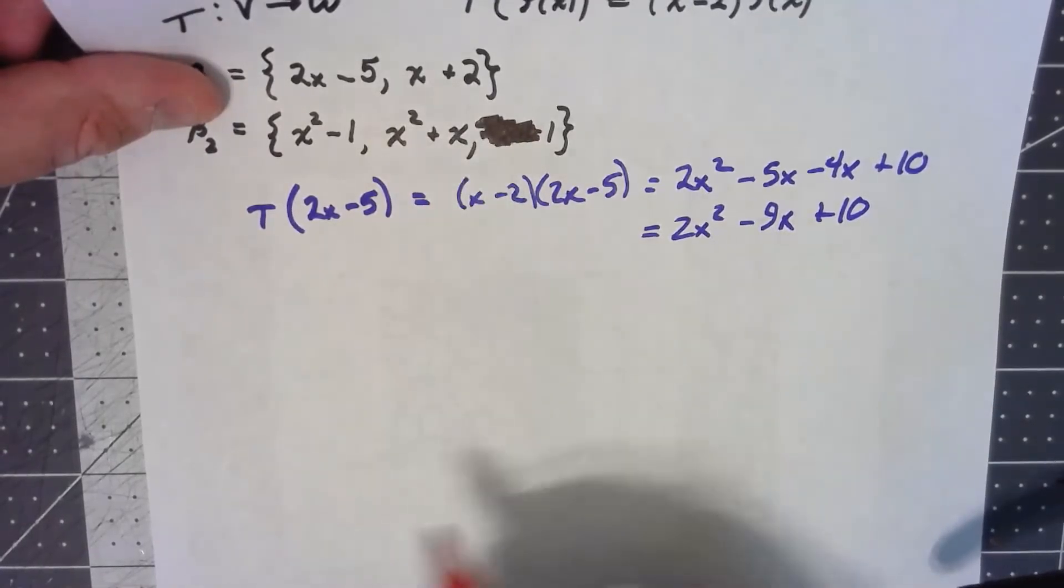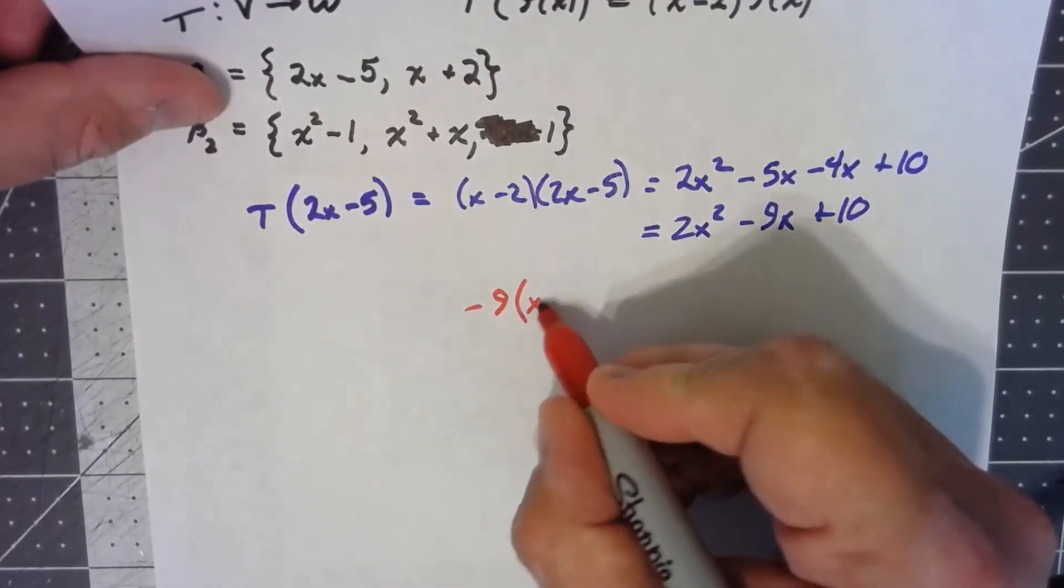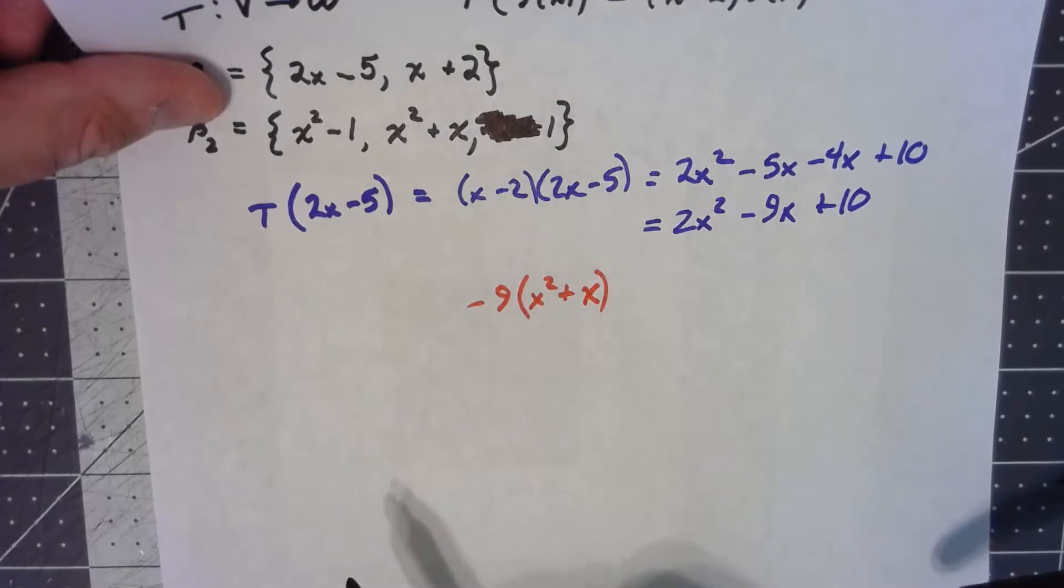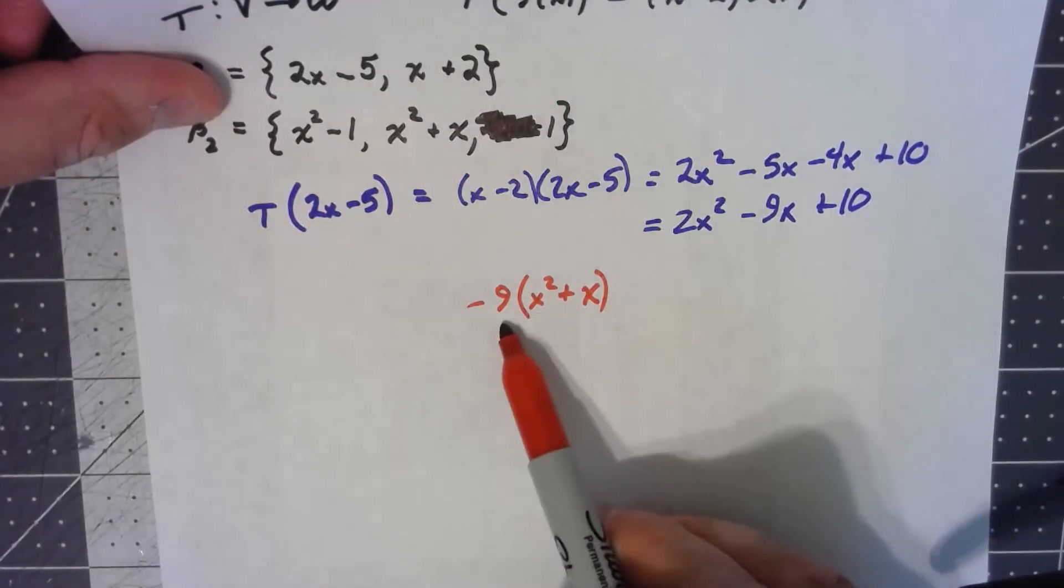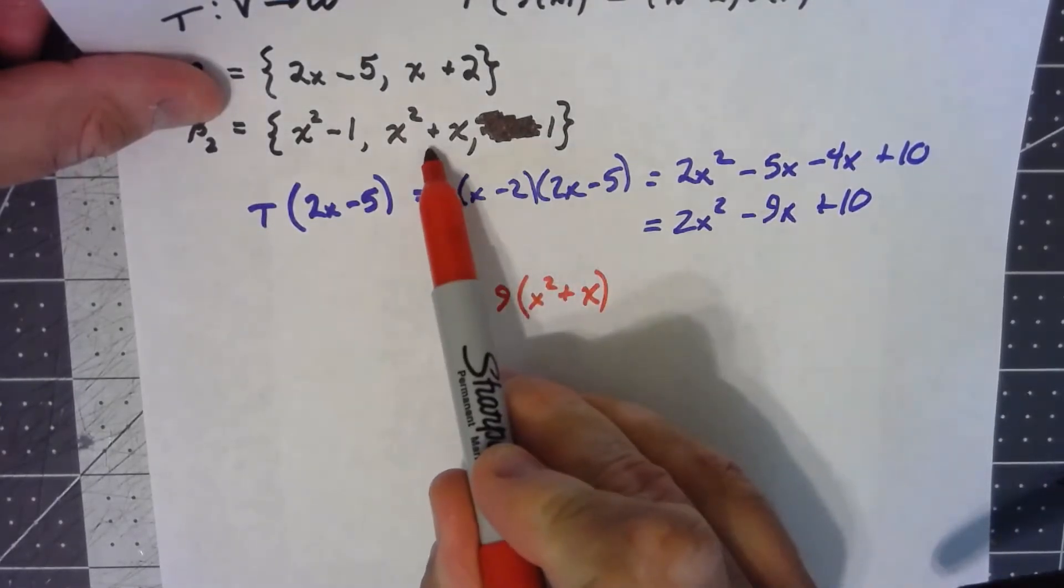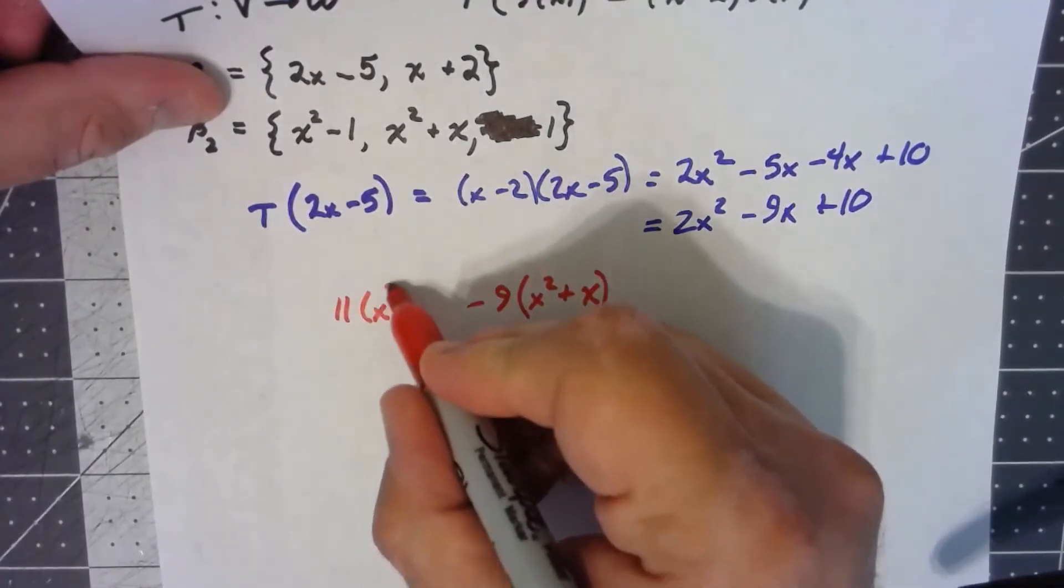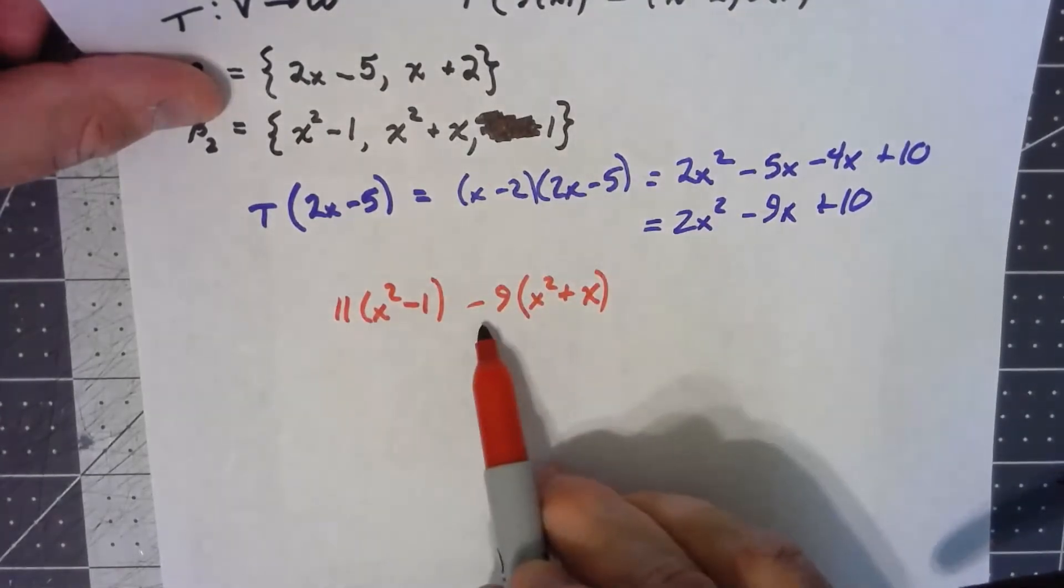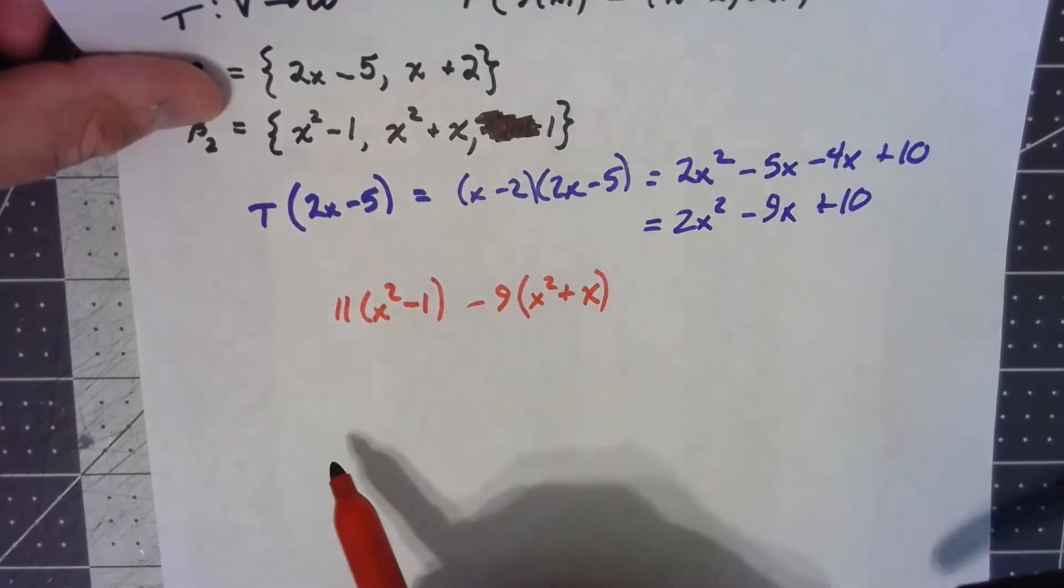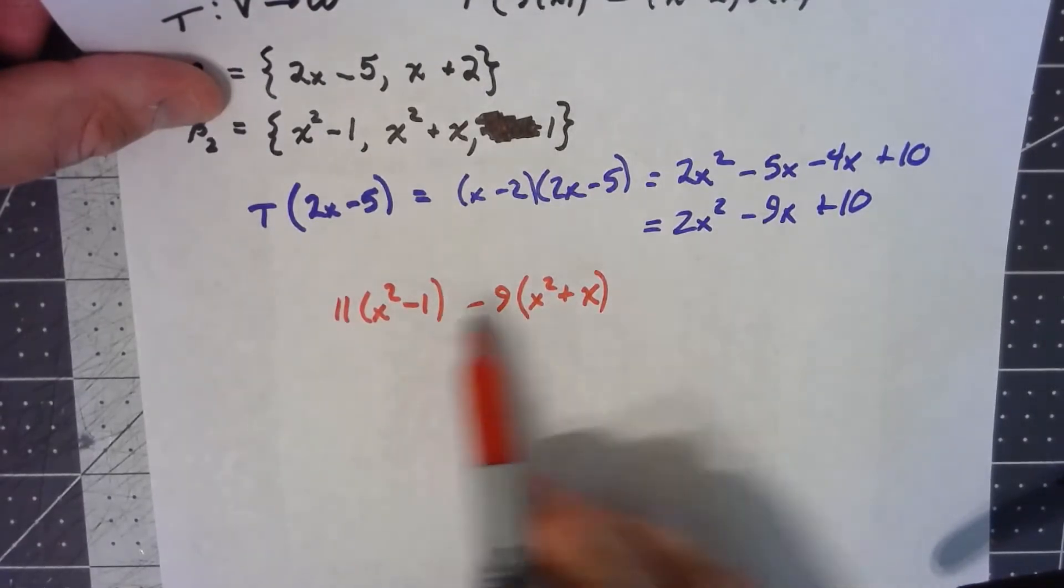That means we have to have negative 9 times x squared plus x. It's the only way we're going to get a negative 9x out of it. That means so far we've got negative 9x squared, and we need 2x squared. The only other x squared is this first one, so I've got to have 11 times x squared minus 1, so that 11x squared minus 9x squared gives me the 2x squared.